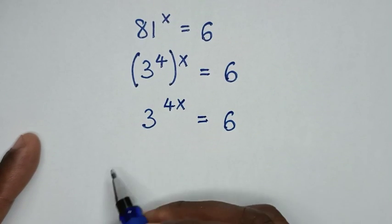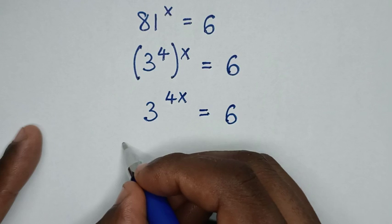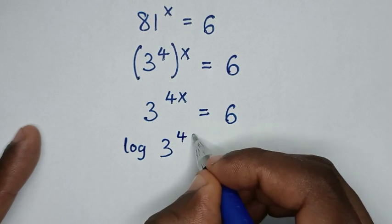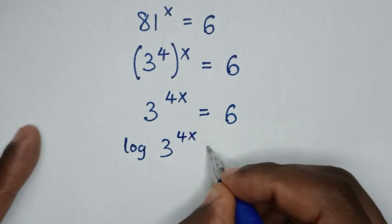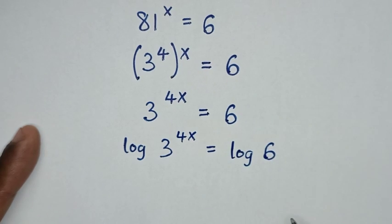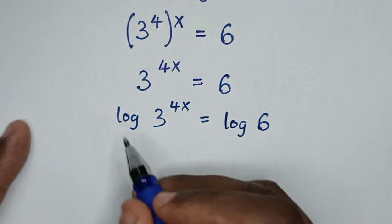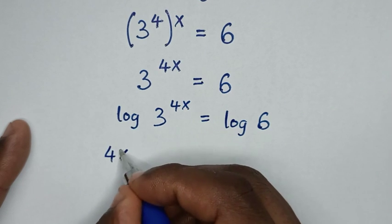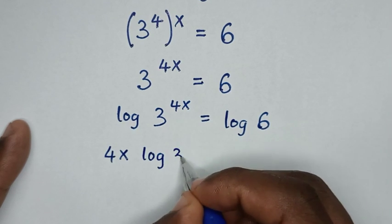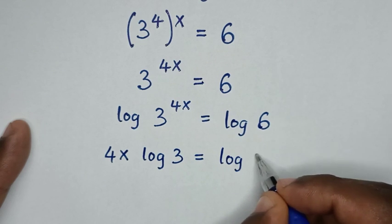In the next step, we'll apply log on both sides. So it will be log of 3 power of 4x is equal to log of 6. Then the power 4x will move to the front, so it will be 4x times log of 3 is equal to log of 6.